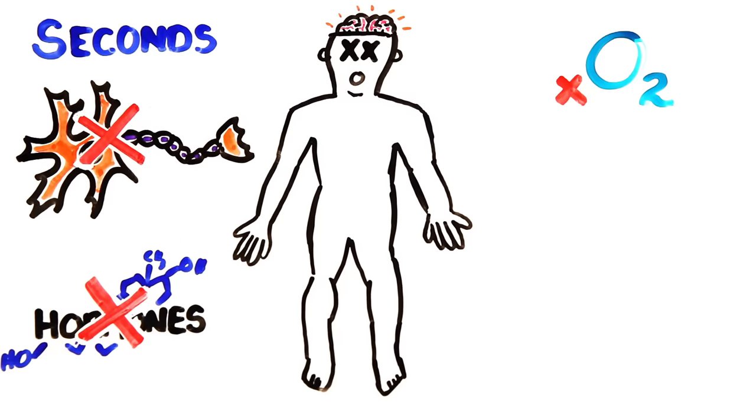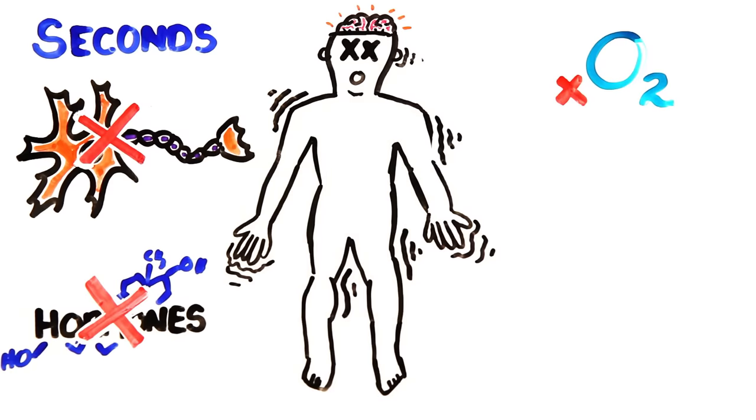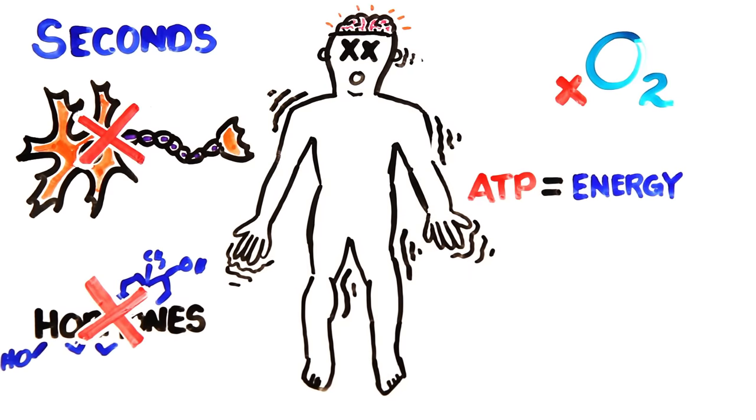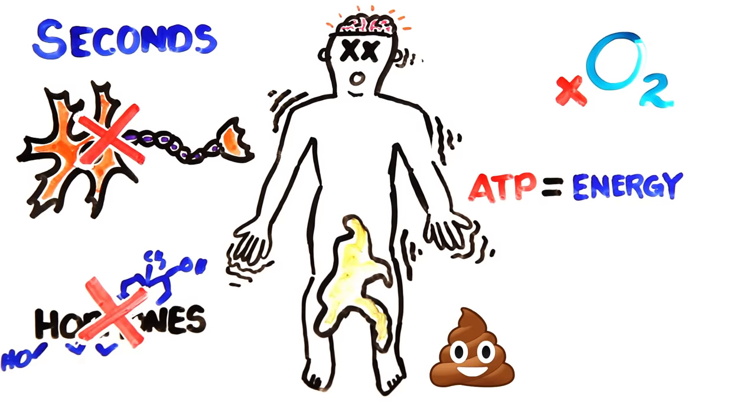And while some bodily functions may persist for a few minutes, as the remaining stores of ATP are used, which is your body's main energy source, the muscles relax, including sphincters, which means defecation and urination may occur.